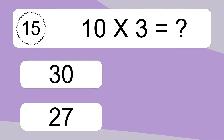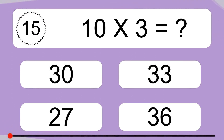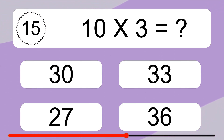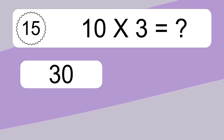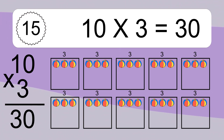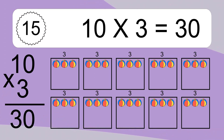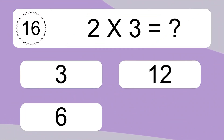10 times 3 equals what? 10 times 3 equals 30. We have 10 boxes, and each box has 3 colorful balls inside. If you count all the balls in all the boxes together, you will have 10 times 3 balls. This equals 30 balls.